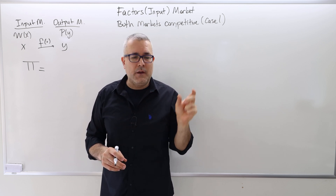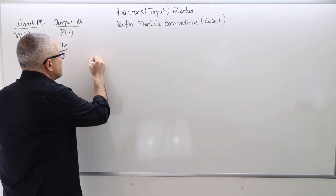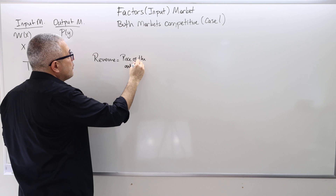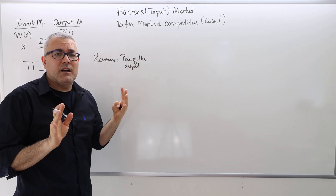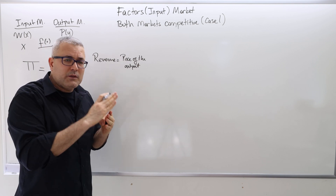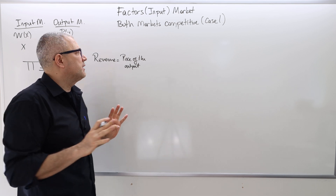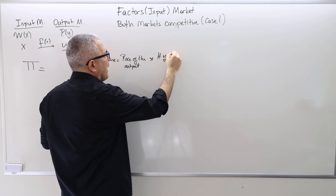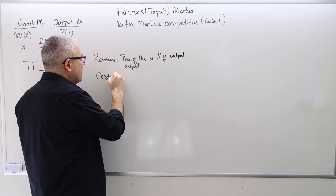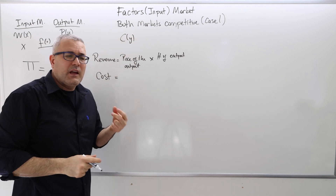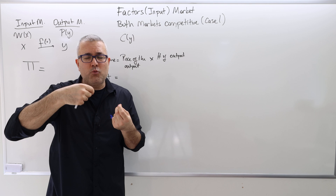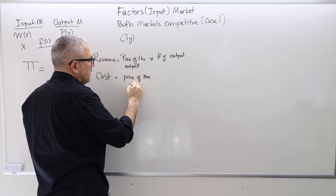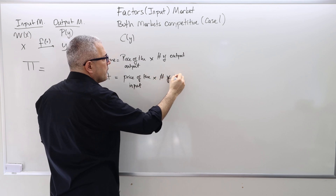What is revenue? As always, it's the price of the output times the number of outputs. We go back to the standard assumption that all buyers pay exactly the same price — there's no price discrimination here, just to keep the model simpler. The cost is the price of the input times the number of inputs you use, which stems from the number of workers — the labors — you hire.